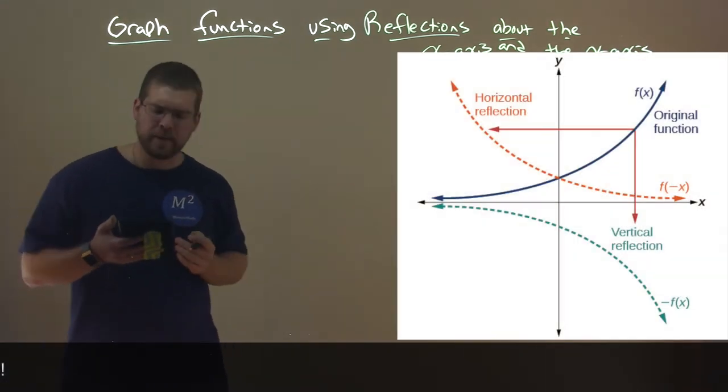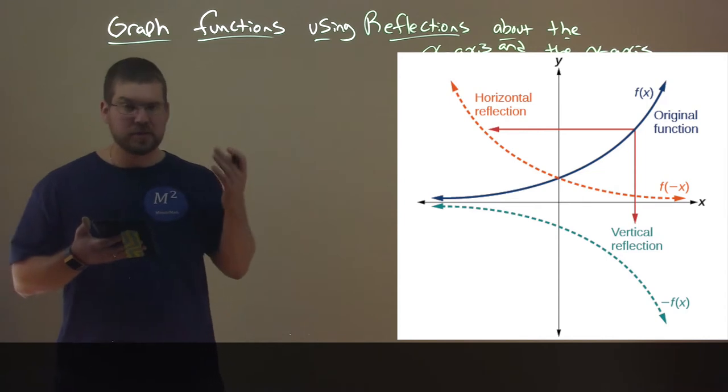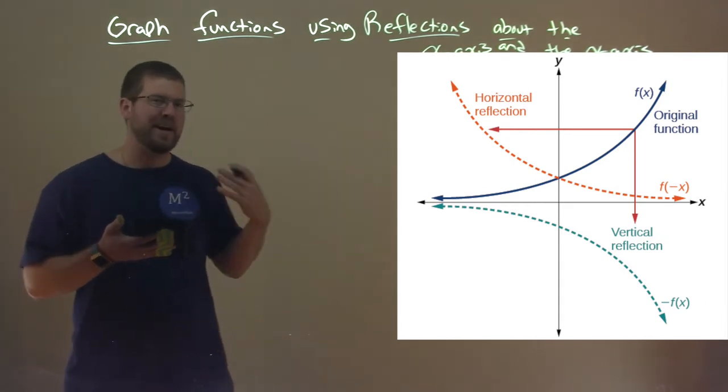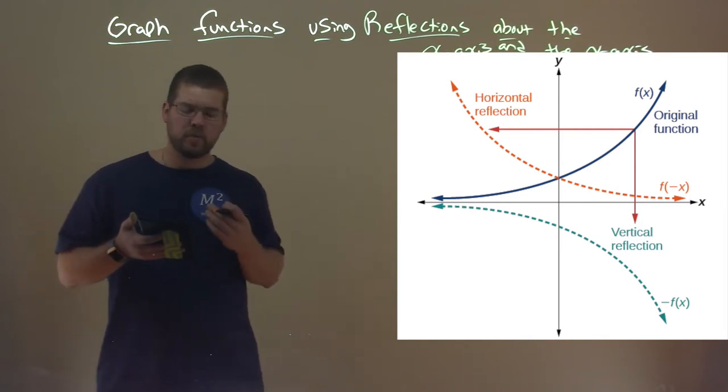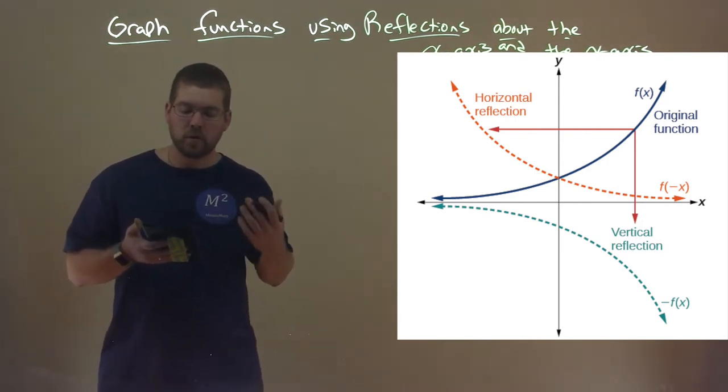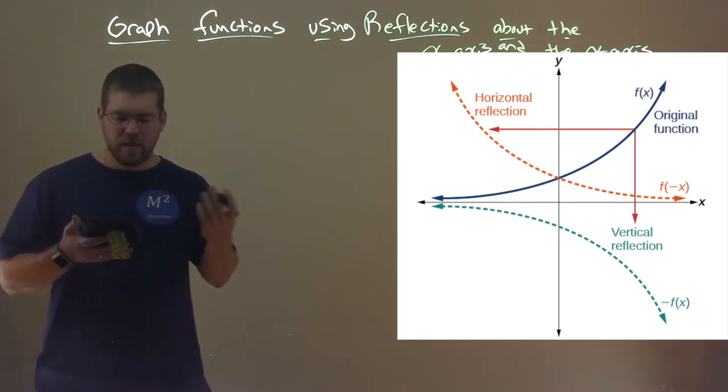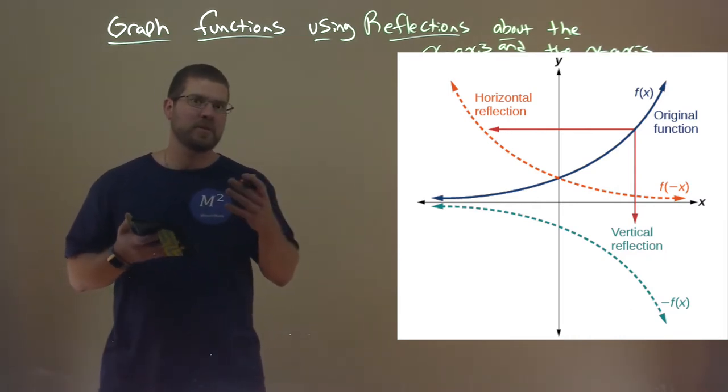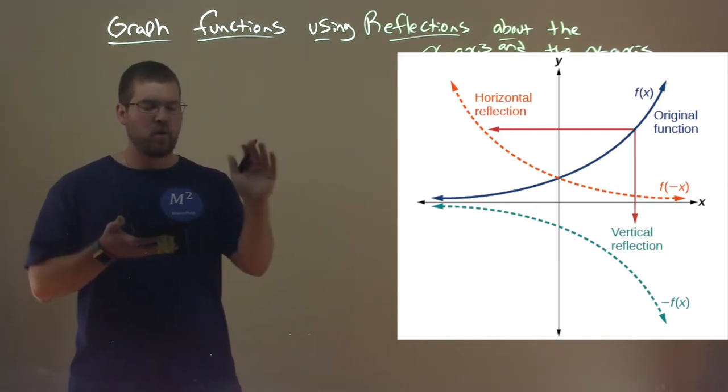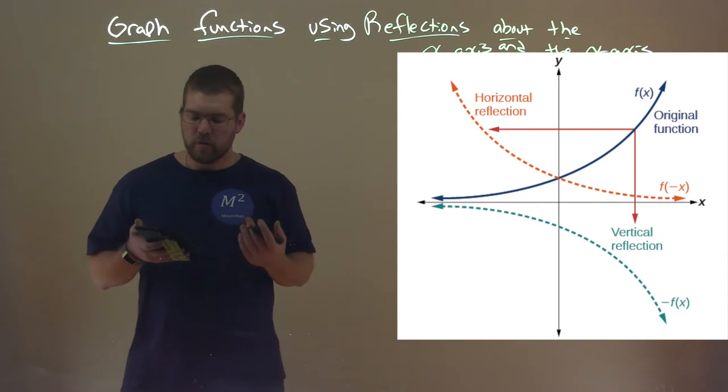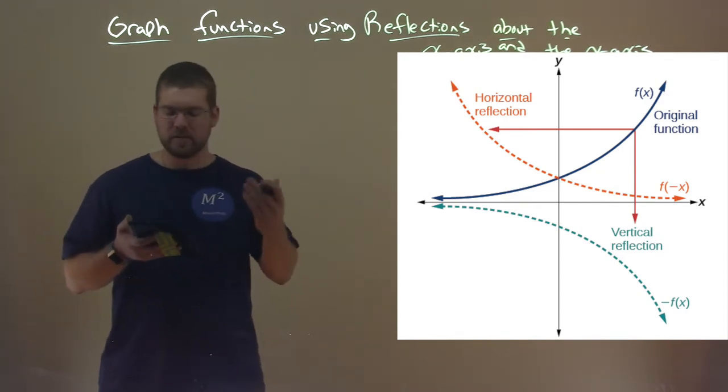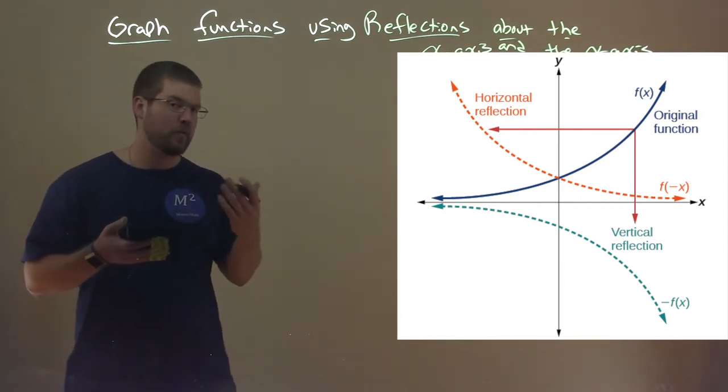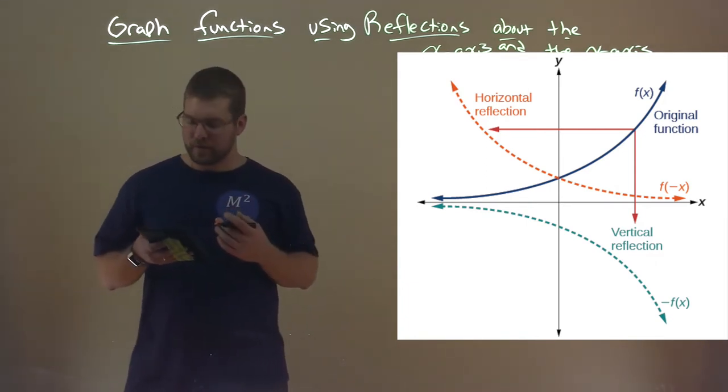So look at this image here. We have an original function f of x, which is in blue. It's a solid blue line and it swoops up to the right. Looks like there's a horizontal asymptote on the y-axis. Well, let's look at the first one here. There's a red line pointing to the horizontal reflection, which is a dotted orange line. That's f of negative x, and that occurs when we take our x values and we turn them into negative x values. And that's going to have that horizontal reflection looking part. The vertical reflection is about the x-axis here, and it's the negative on the outside of f of x, and we have that teal color right there, and that's a vertical reflection of f of x there, and that's the same as negative f of x.